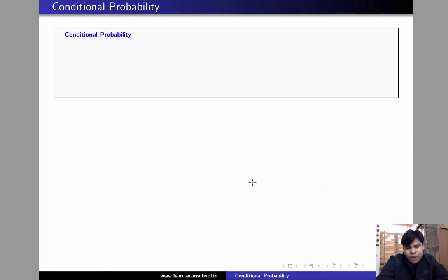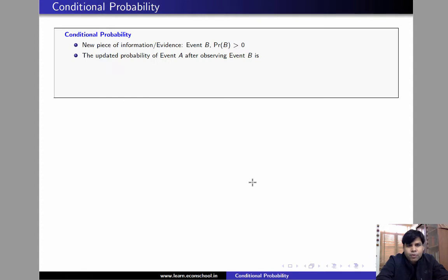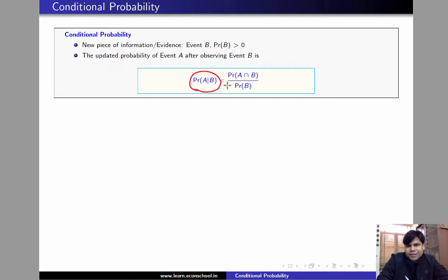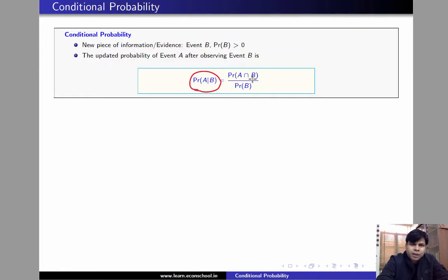So let us now define conditional probability and understand this definition using some examples. Suppose we are interested in the probability of event A, and the new piece of information or evidence is that event B has occurred, and suppose the probability of B is strictly positive. We want to find the updated probability of event A after observing event B. The notation is: probability of event A given B equals probability of A intersection B divided by probability of B.